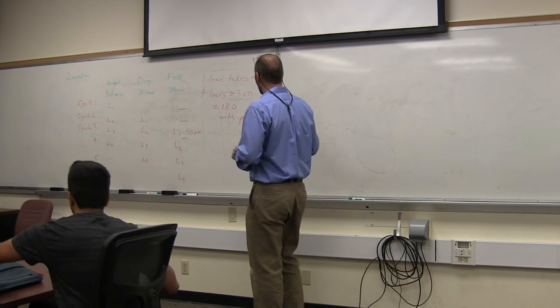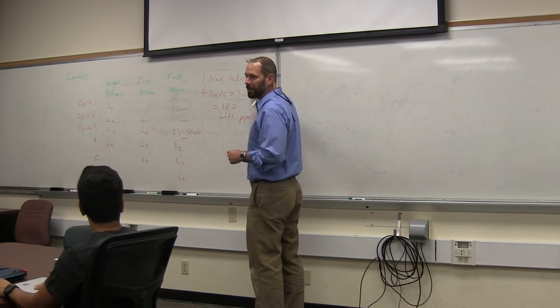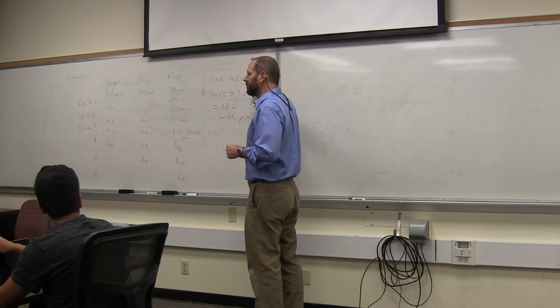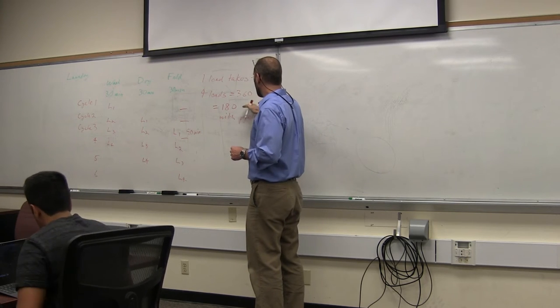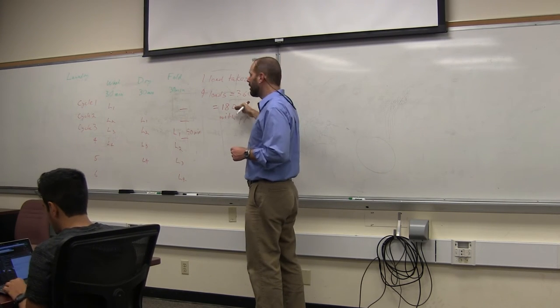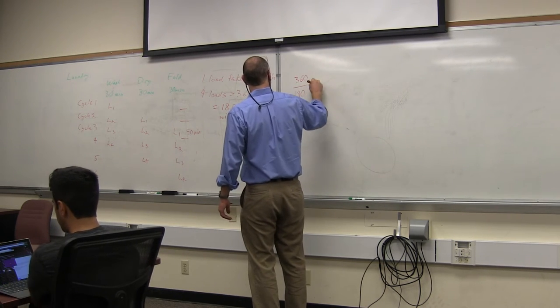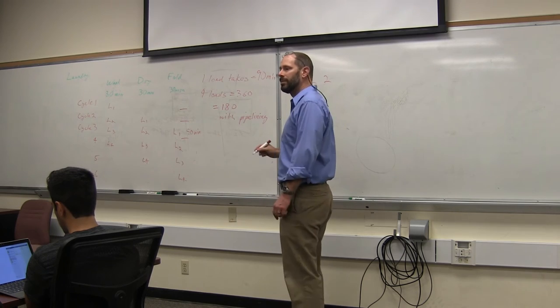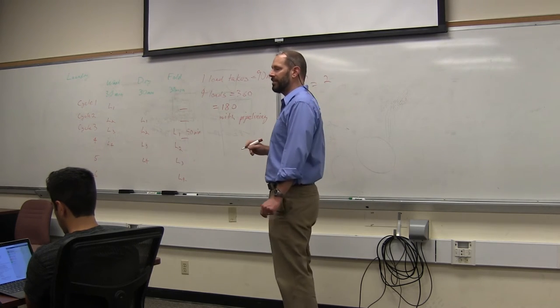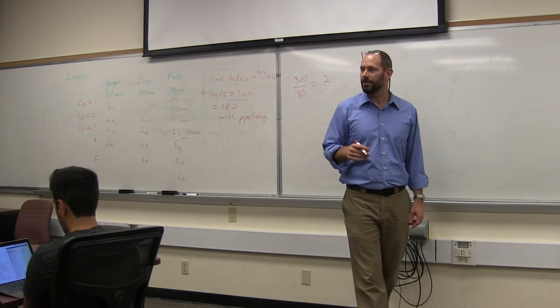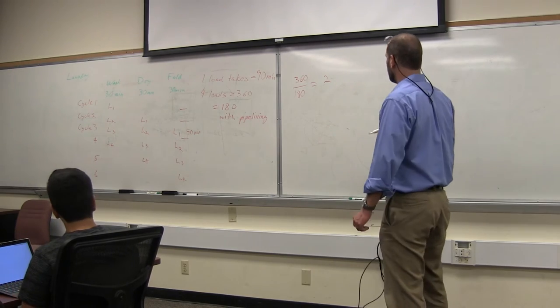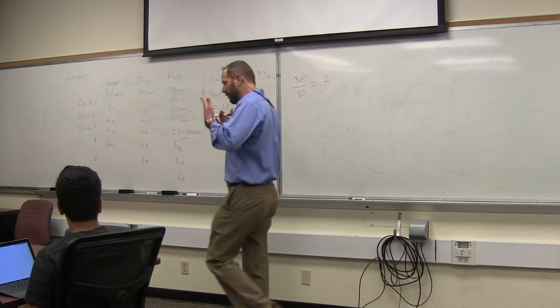So without pipelining, 360 loads or minutes. With pipelining, 180 minutes. So we can actually compute the speed up. So 360 divided by 180 equals two. It is twice as fast to use pipelining.